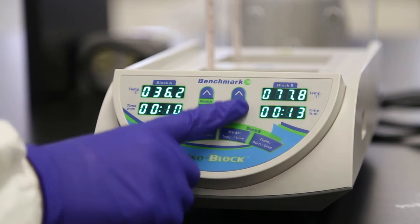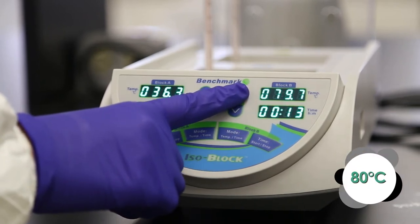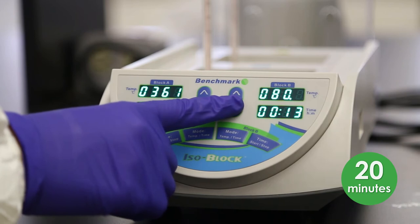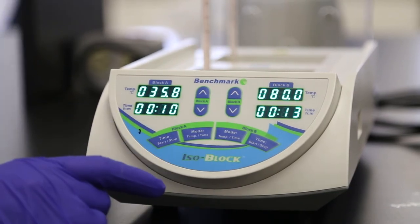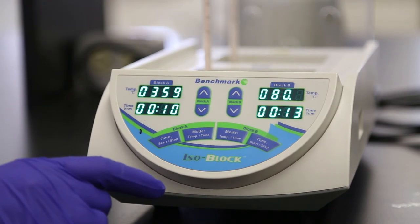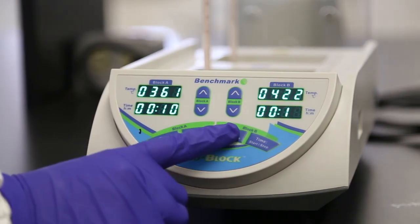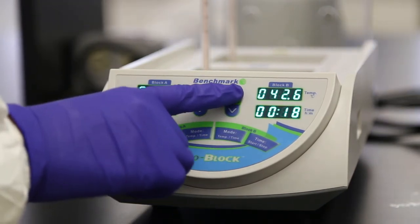Next, set the temperature for block B to 80 degrees Celsius and the timer for 20 minutes using the controls for block B following the same steps you used for block A. Again, the block will immediately start heating. Do not start this timer either.